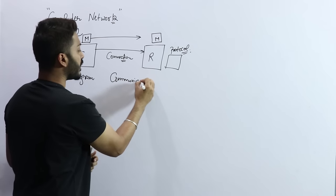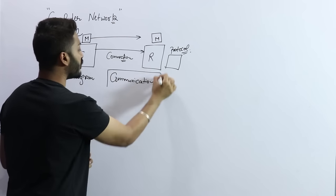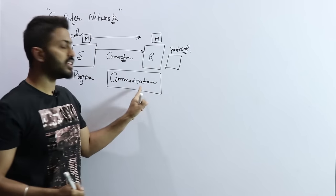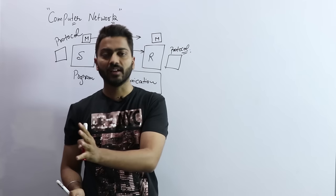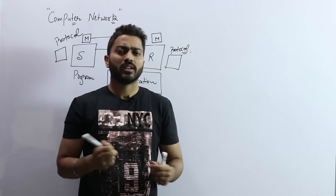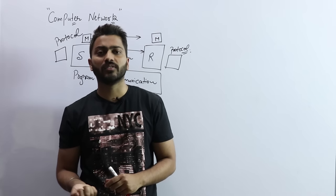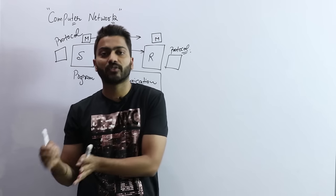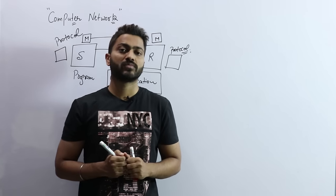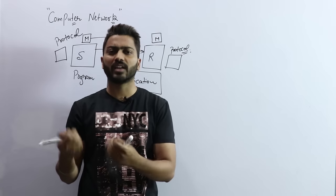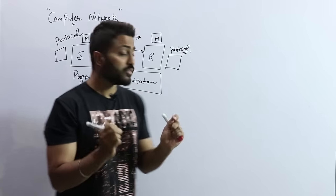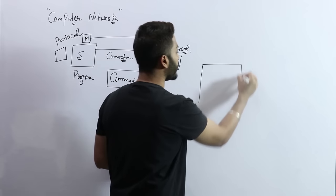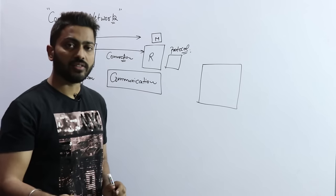Connection with proper protocols and a set of instructions — if they are followed, then we can say there is proper communication between sender and receiver. In computer network terms, we also use the terms client and server. So whatever client or server, or sender or receiver, there are different scenarios where they can be present.